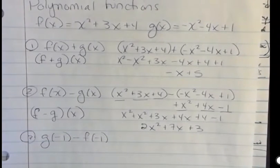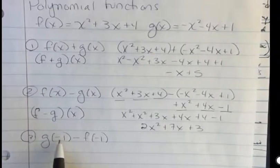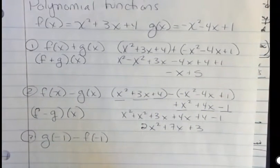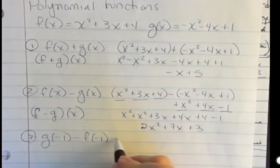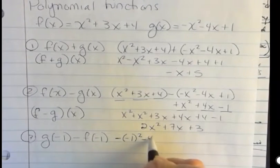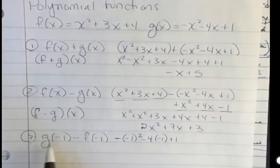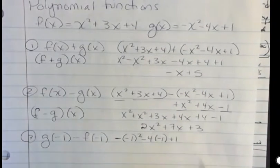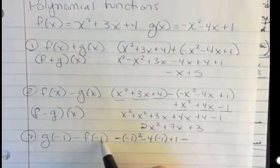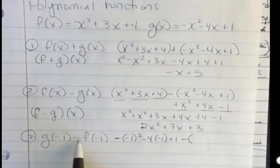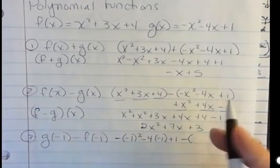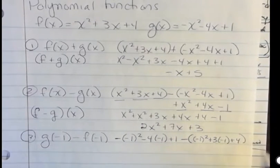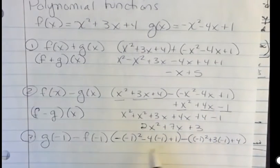What if I said g of negative 1 minus f of negative 1? If I give you a negative 1 instead of an x, what I'm saying is where you used to see the x, replace it with negative 1. Here's a couple different ways I could do this problem. One is I could plug in the negative 1 for g of x. Negative 1 squared minus 4 times negative 1 plus 1. That is g of negative 1. I took the g and I replaced the x with negative 1. Notice I put parentheses around the negative 1 so I wouldn't make any sign errors. Then I have minus, and now I'm going to plug in the negative 1 into the x. I'm going to put parentheses around that because I'm subtracting everything I get for this. So I have negative 1 squared plus 3 times negative 1 plus 4. Now I could simplify this. This is my g of negative 1. This is my f of negative 1. I could simplify this.